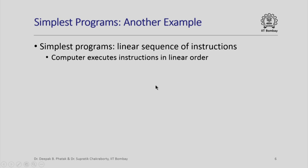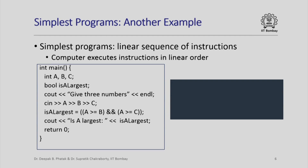Here is another example of sequential execution of statements — our program which takes three numbers and tells us whether the first number read is the largest of the three. The first statement here is a declaration; there is nothing for the computer to do, this basically tells the compiler how much storage to allocate for these variables. The second statement is also a declaration — is_a_largest is a boolean variable, so once again nothing for the computer to execute; this just tells the compiler how much memory to allocate for this variable.